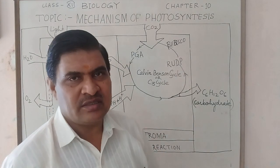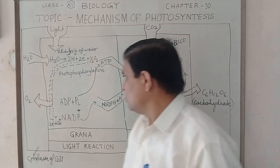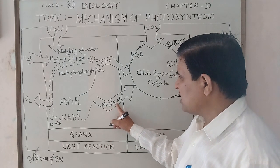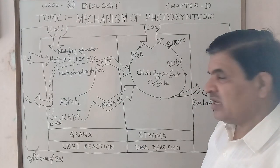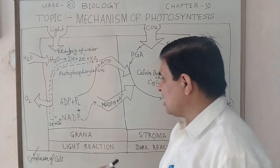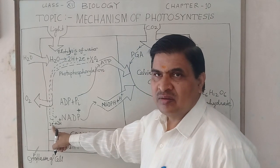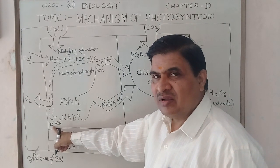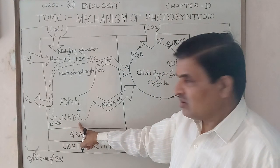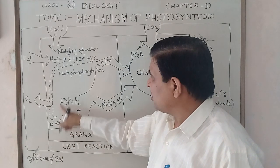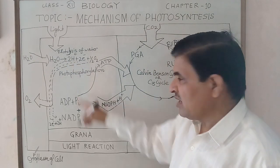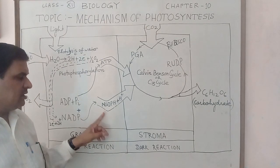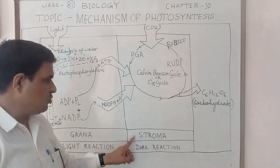ATP is considered assimilatory power in the chloroplast. The synthesis of NADPH+H+ also takes place in the light reaction, as electrons are transported from Photosystem II to Photosystem I, reaching ferredoxin. NADP+ combines with hydrogen ions produced during photolysis, and synthesis of NADPH+H+ takes place, which is utilized in the dark reaction.